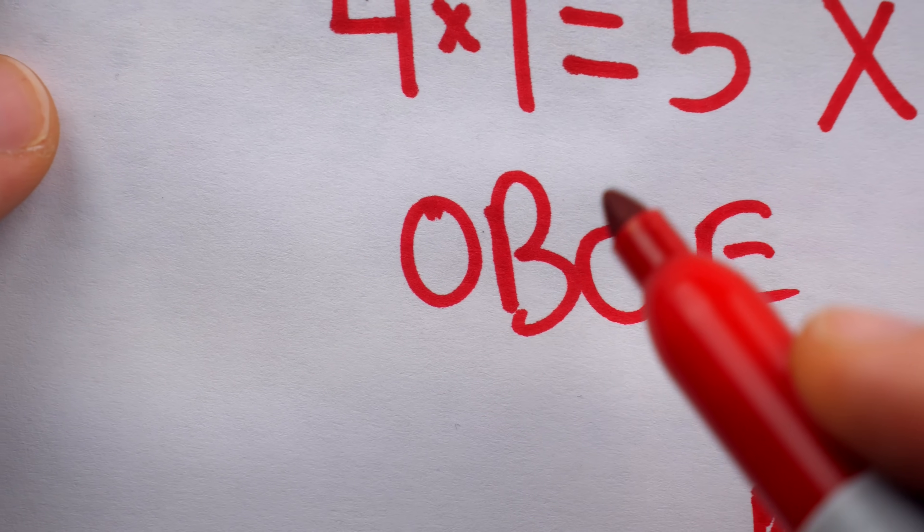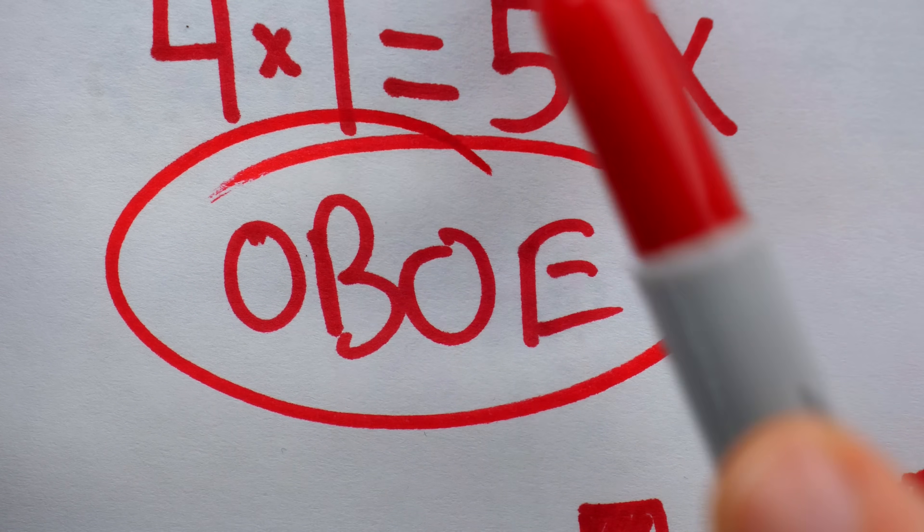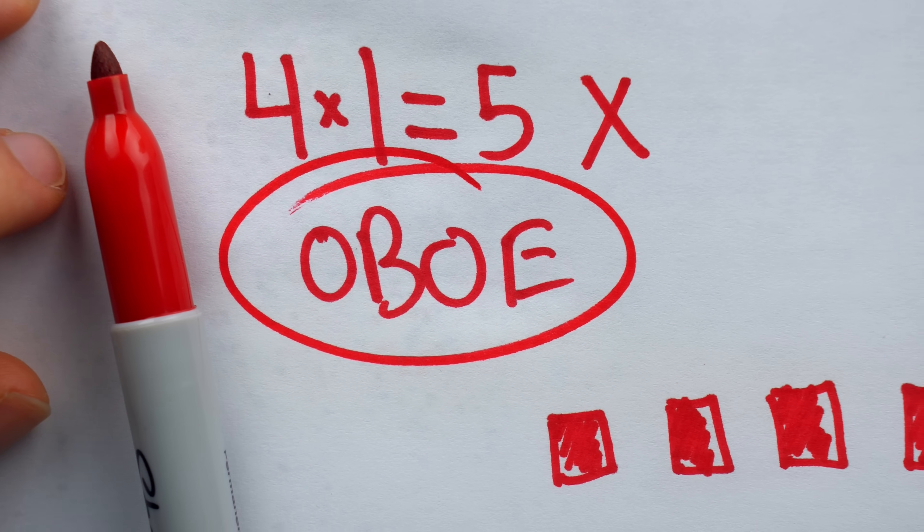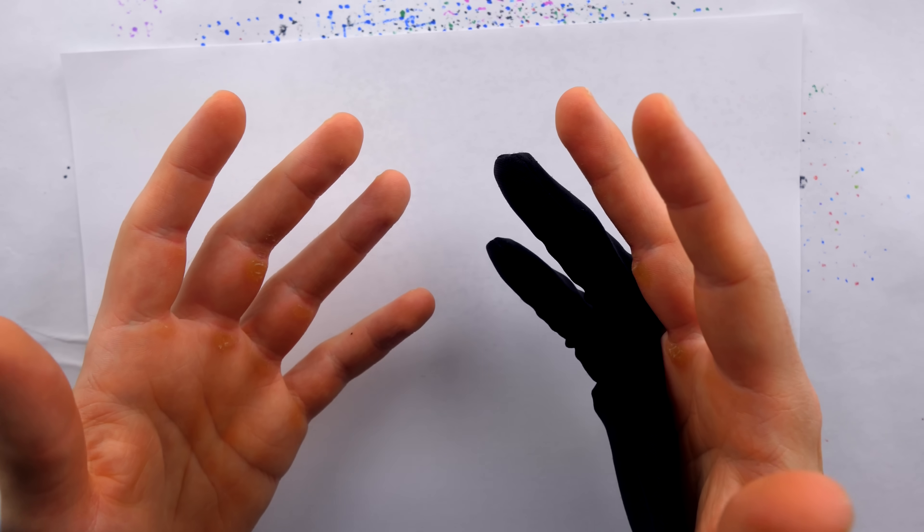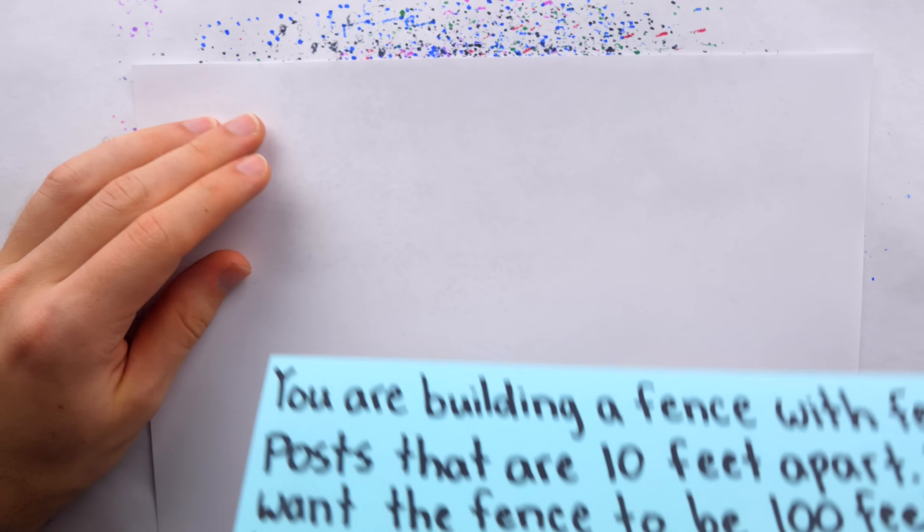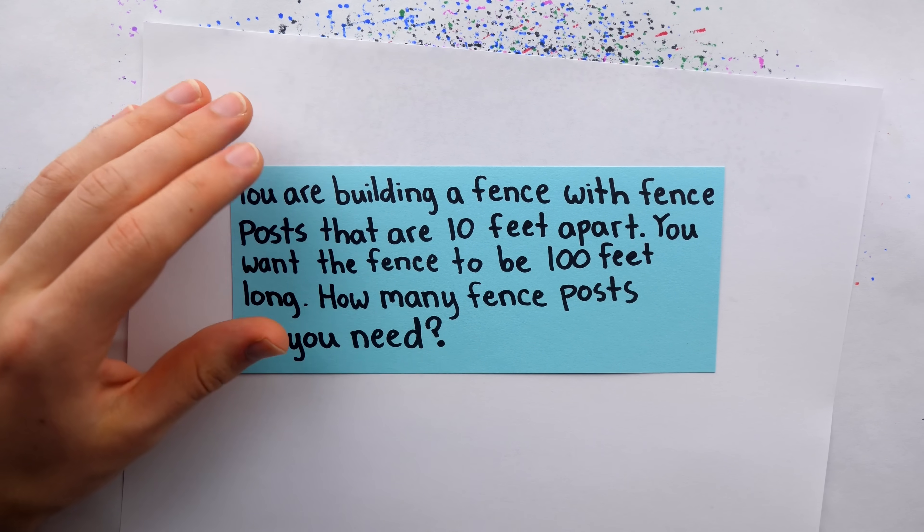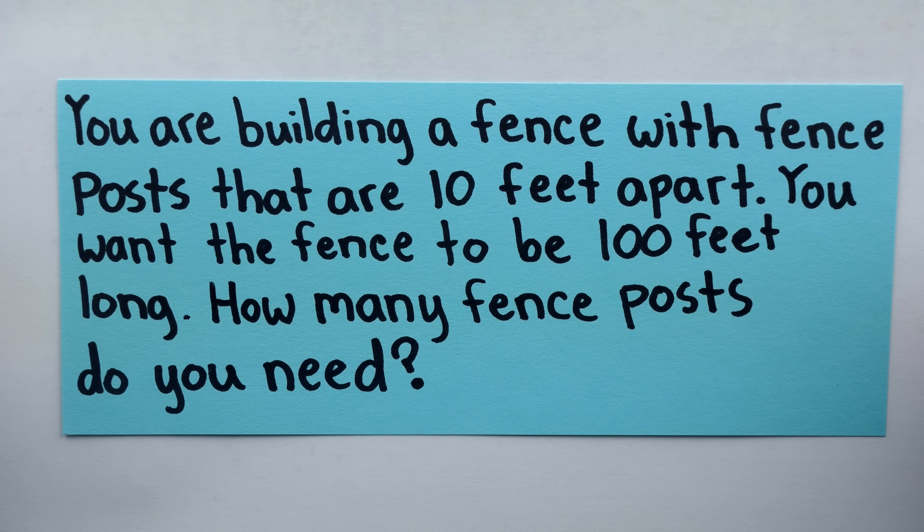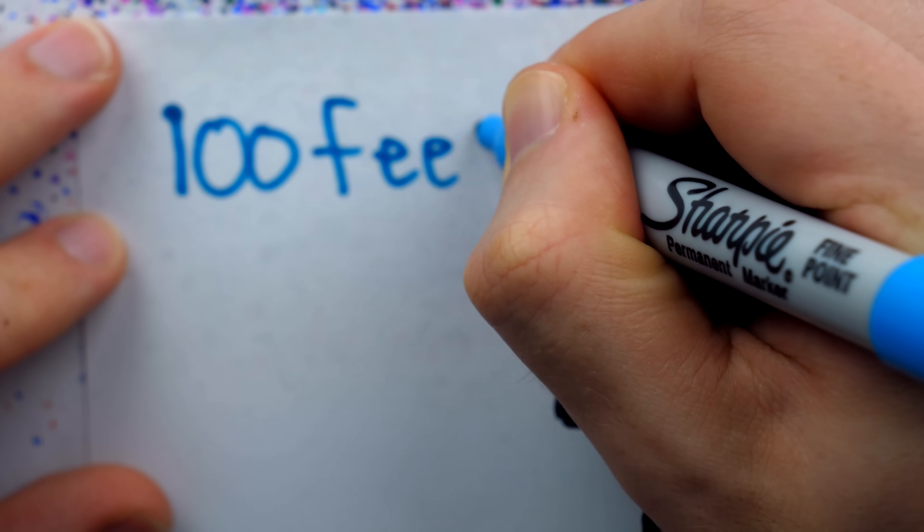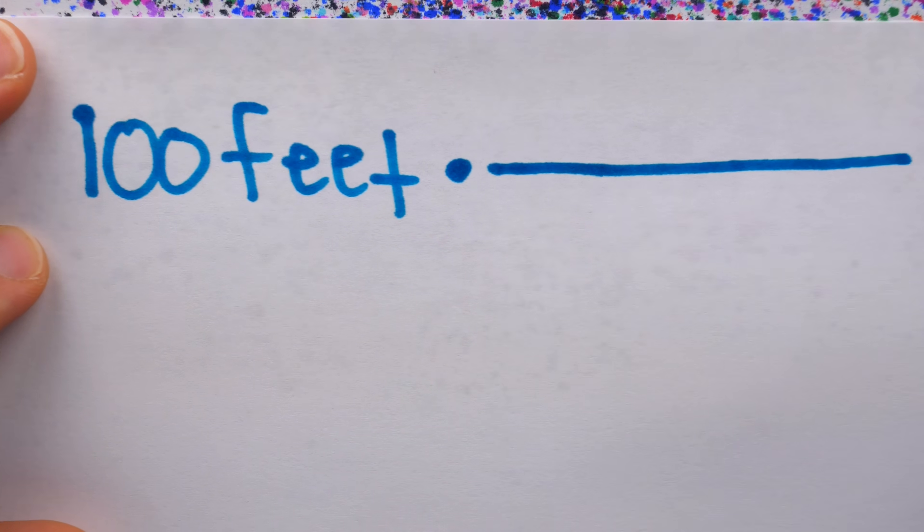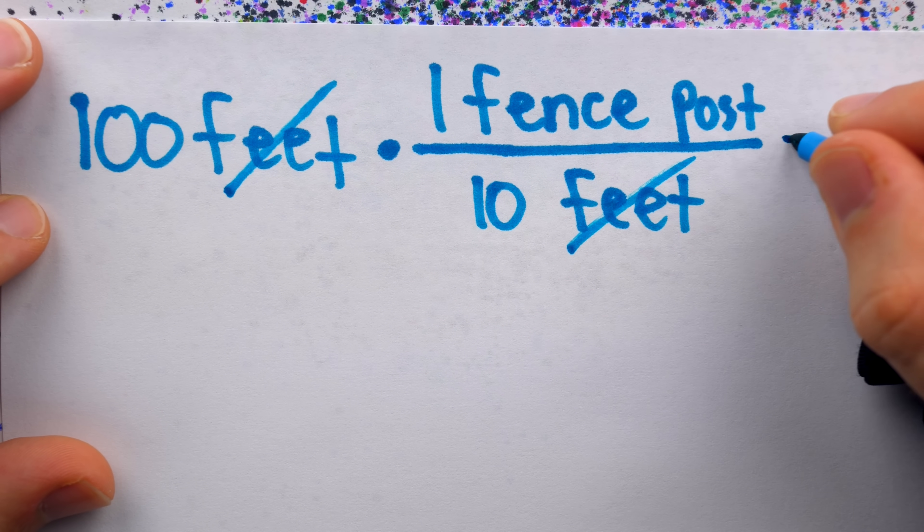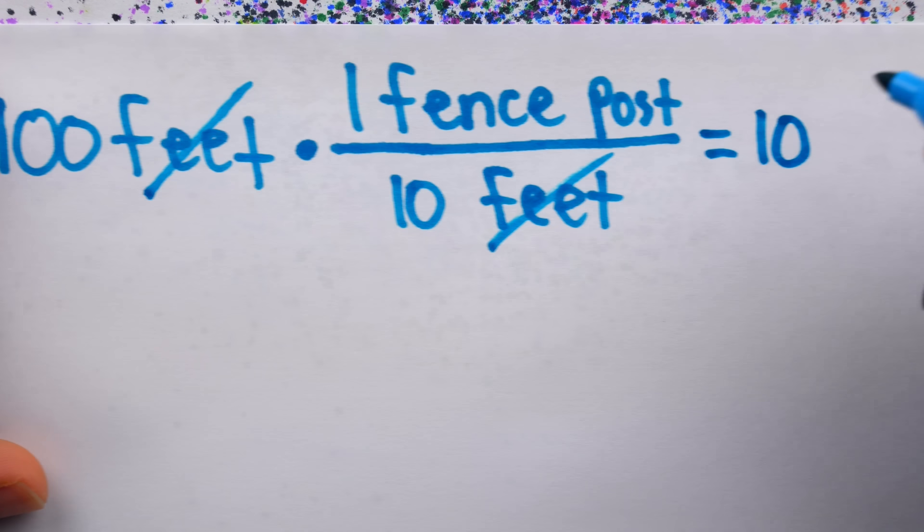Now, if the off by one error name is a little bit too on the nose for you, there is a cuter name for this error that comes from a simple question that often tricks people. The question is, you are building a fence with fence posts that are 10 feet apart. You want the fence to be 100 feet long. How many fence posts do you need? Have your answer? It's all too easy to just say, okay, 100 feet, we need one fence post every 10 feet. So, do the math, 100 divided by 10, and that's going to be 10 fence posts.